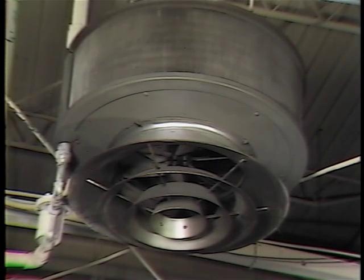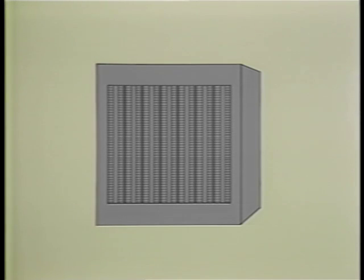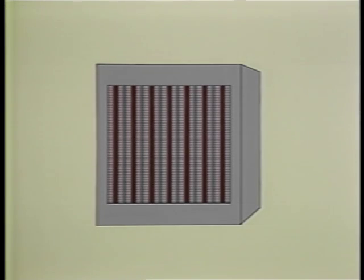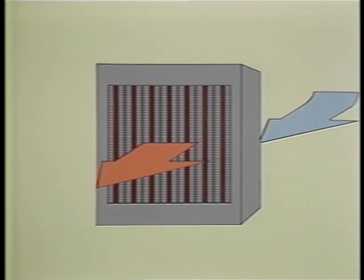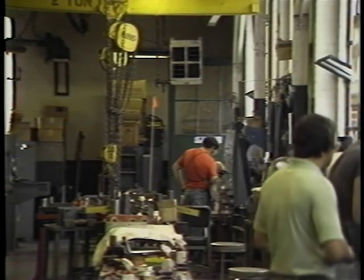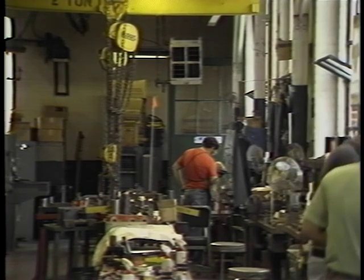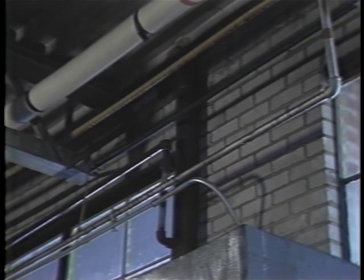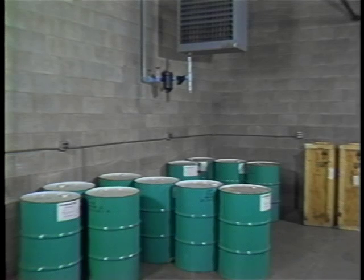Unit heaters may take a variety of forms and sizes, but their operation is essentially the same. A heat transfer medium is circulated through a coil, and either room or outside air is blown across the coil by the unit's integral fan. About 80% of these units are used for heating — to maintain comfortable temperatures, to neutralize cold air infiltration, to prevent pipeline freezing, or to provide a controlled environment for finished goods.